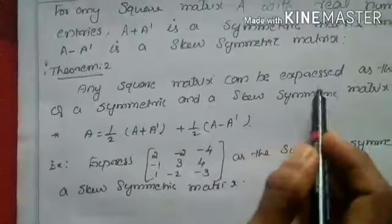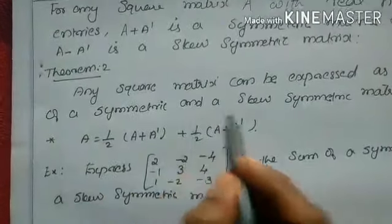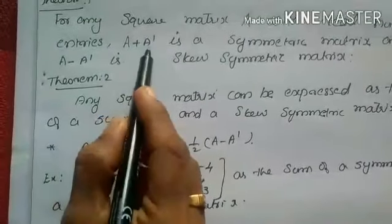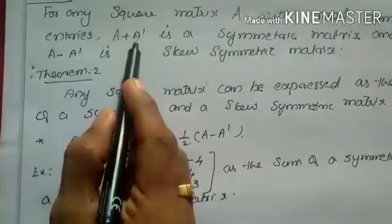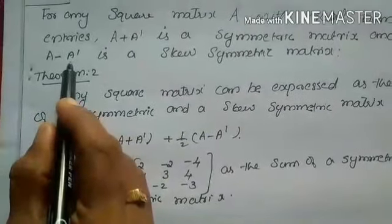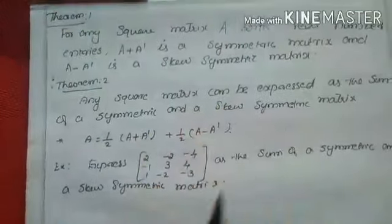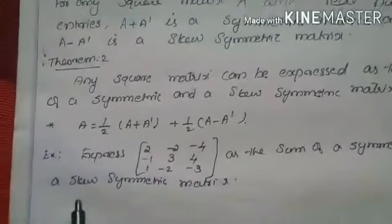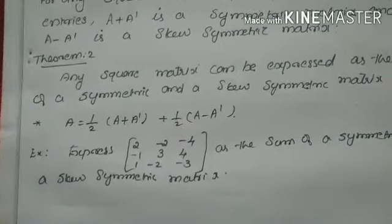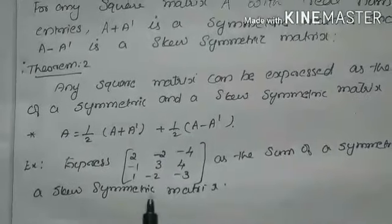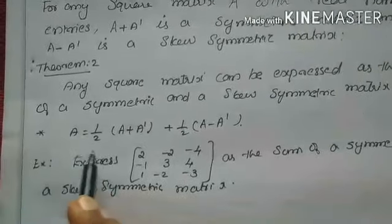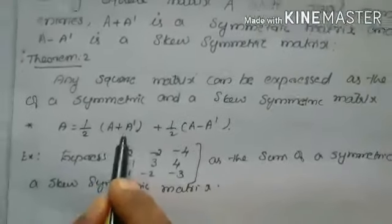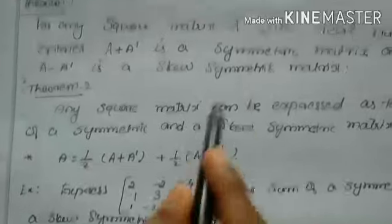Theorem 2: Any square matrix can be expressed as the sum of a symmetric and a skew-symmetric matrix. From Theorem 1, adding A and its transpose gives a symmetric matrix, and subtracting gives a skew-symmetric matrix. So whenever we get a question to express a matrix as the sum of symmetric and skew-symmetric matrices, we write A as half times (A plus A dash) plus half times (A minus A dash). A plus A dash is symmetric and A minus A dash is skew-symmetric.